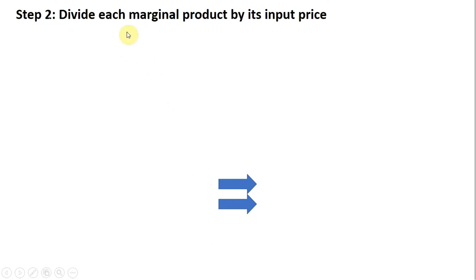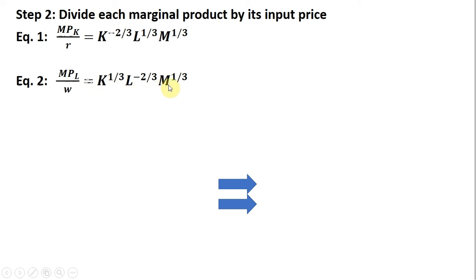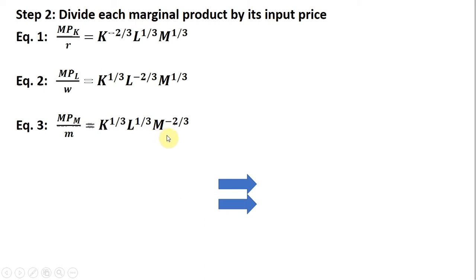Step 2: divide each marginal product by its input price. We'll call this equation one — taking the marginal product of capital and dividing it by the rental rate R. Since R equals one, we just get back the marginal product of capital. The marginal product of labor divided by the wage: since the wage is one, we get back the marginal product of labor. Finally, for raw materials, dividing the marginal product by its input price of one, we get back the marginal product of materials.